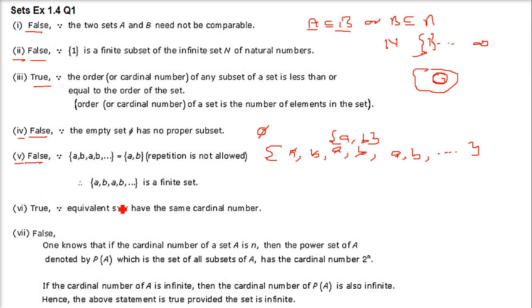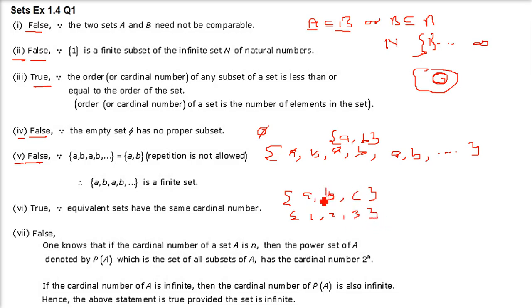Next: {a, b, c} and {1, 2, 3} are equivalent sets. This is true. You just count the number of elements: there are 3 elements in each. When the number of elements is the same, they are called equivalent sets.